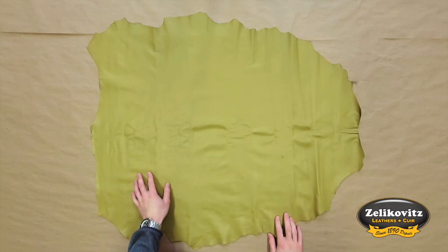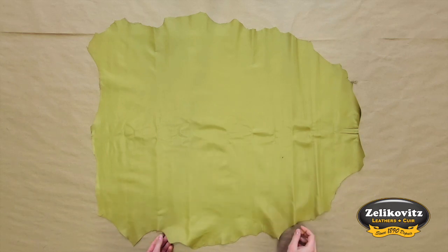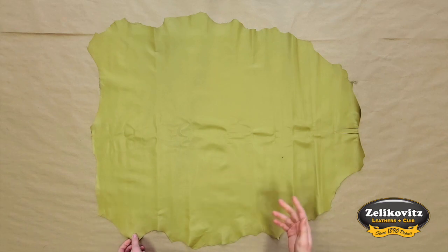The grain side of this leather has a smooth satin finish with a very supple texture and a light pebbled grain that's indicative of lambskin.